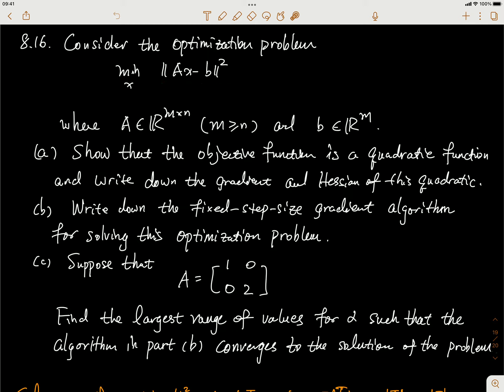A is a matrix of size m by n, where m is greater than or equal to n, and b is a vector of dimension m.